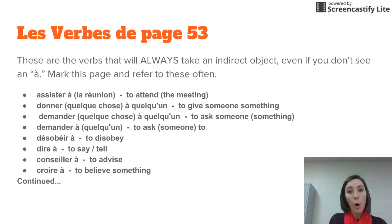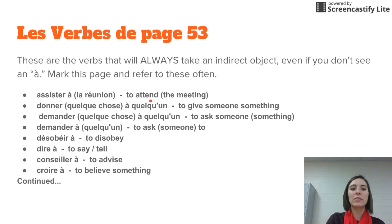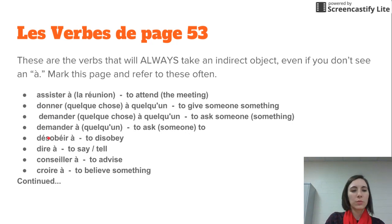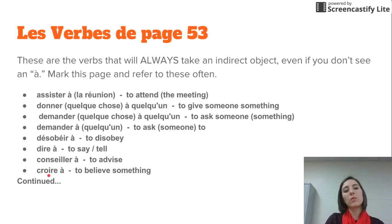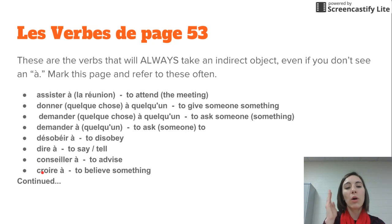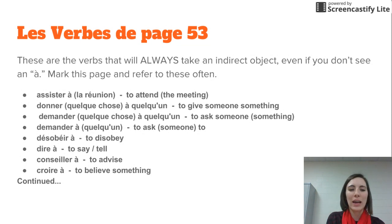There are some verbs that always indicate they need an indirect object pronoun — memorize this list, les verbes de page 53. Assister à means to attend (assister à la réunion). Donner quelque chose à quelqu'un means to give someone something. Demander à quelqu'un or demander quelque chose à quelqu'un means to ask someone something. Désobéir à means to disobey. Dire à means to say or tell. Conseiller à means to advise. Croire à means to believe something — note that in English we don't say 'believe at,' but in French you always say croire à. These are verbs that often don't feel like they need 'to' in English, but they must have it in French.